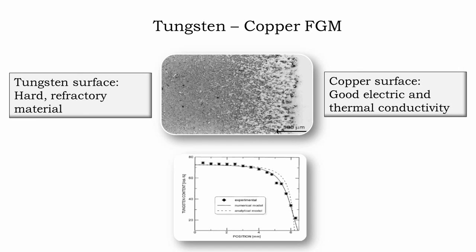Now let's look at an example of this functionally graded material. This figure shows a scanning electron microscope image of a tungsten-copper FGM. The figure clearly shows the gradual variation of constituent material content. The extreme left end contains 100% tungsten and the extreme right end contains 100% copper. This FGM efficiently provides the combined advantages of these two constituent materials — tungsten is a hard refractory material, while copper provides good electrical and thermal conductivity.